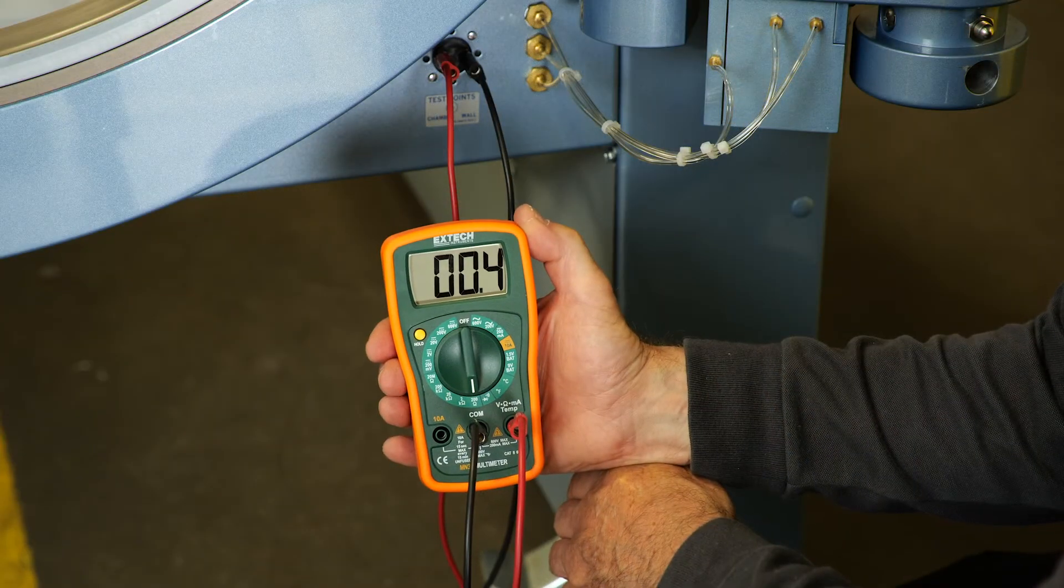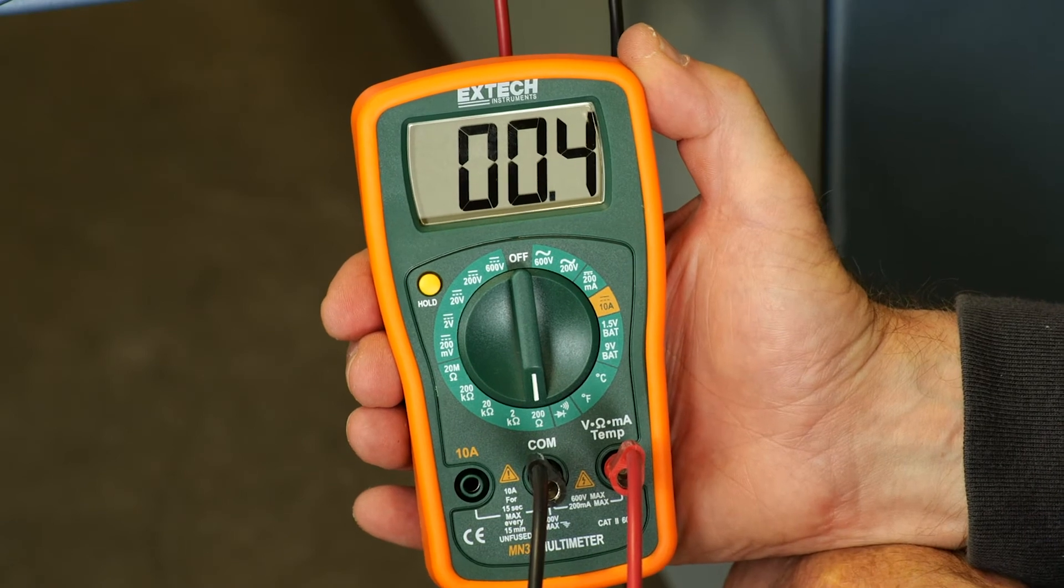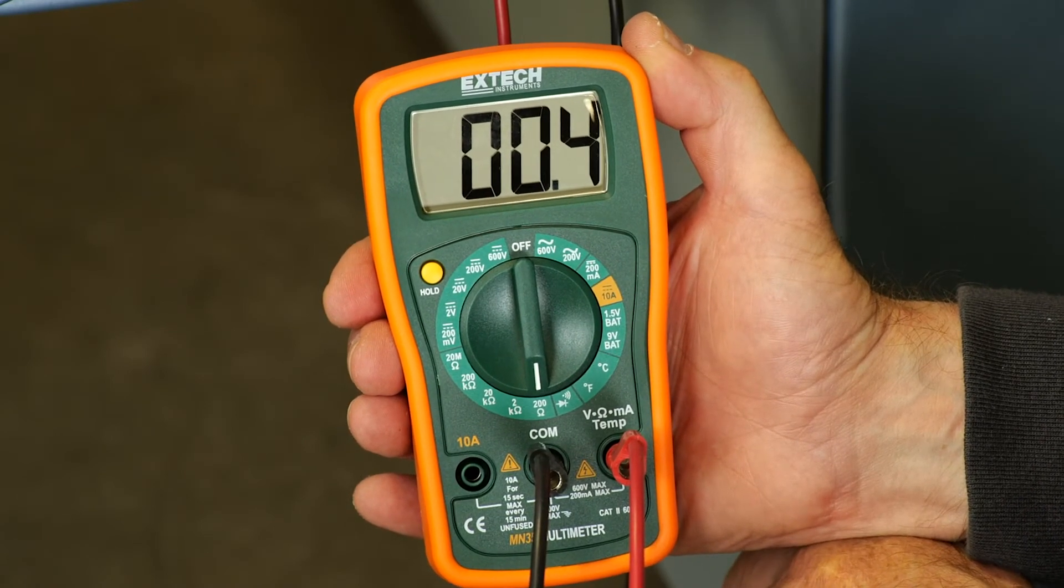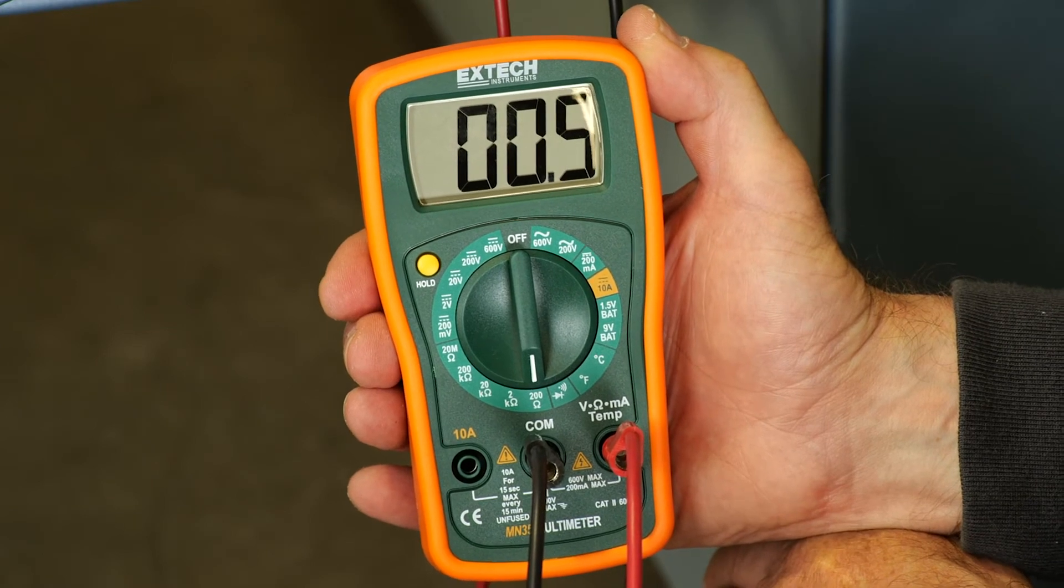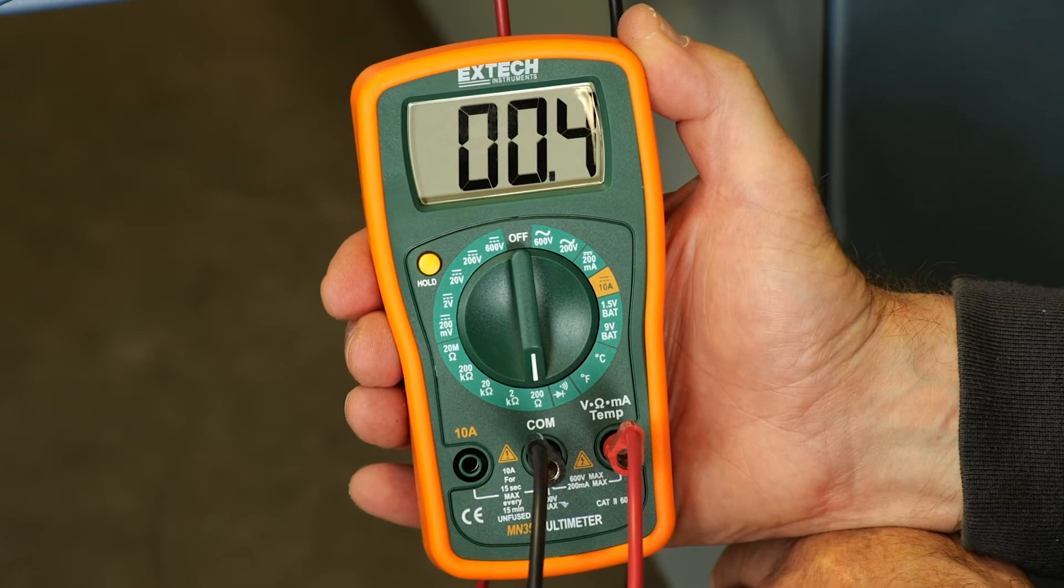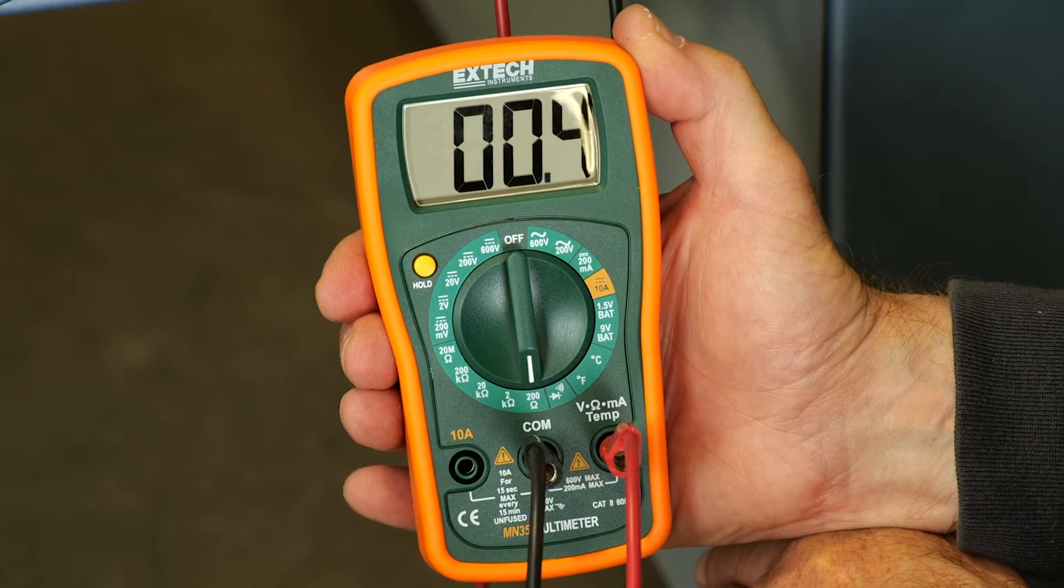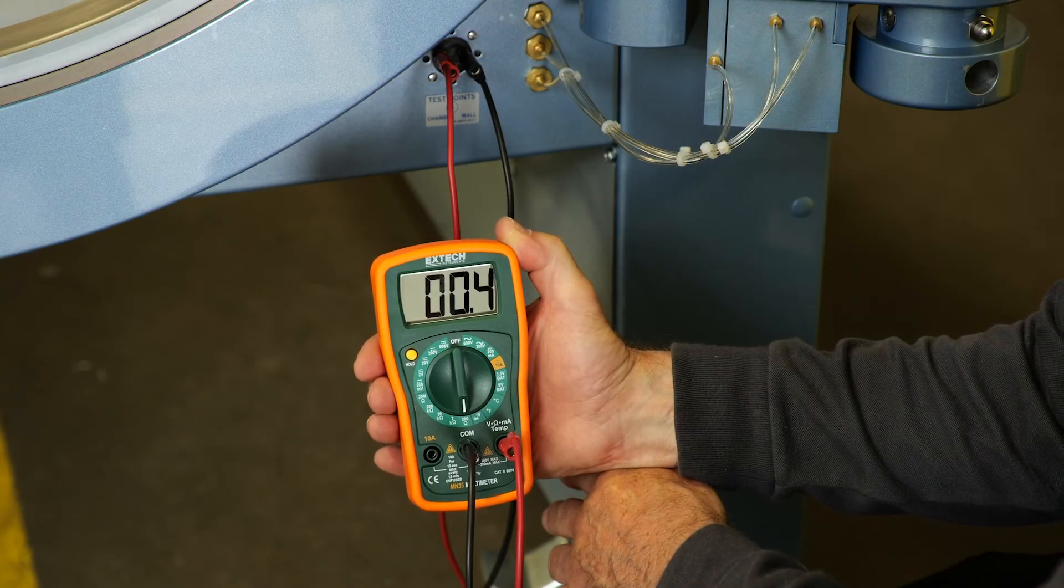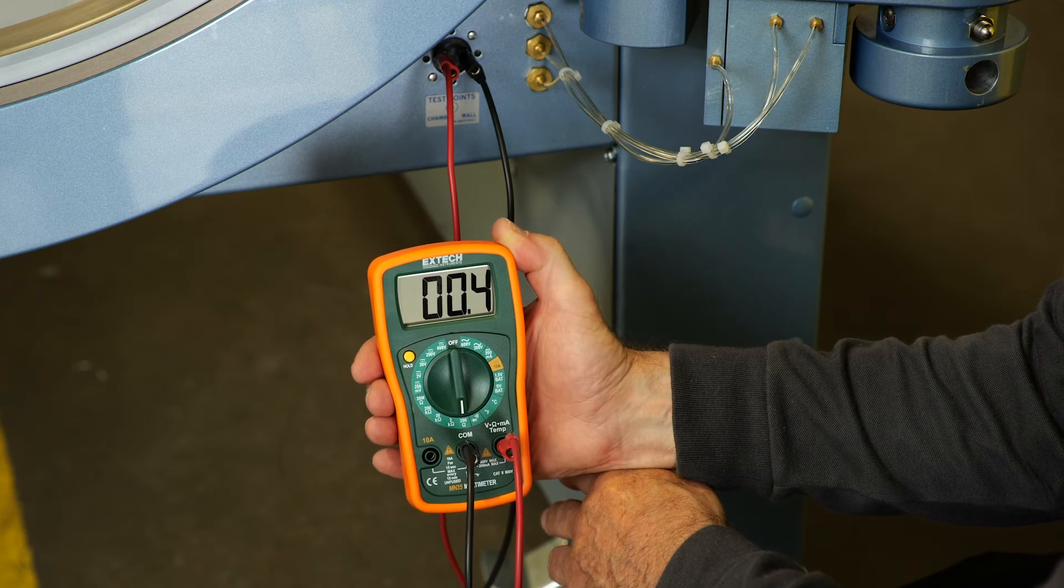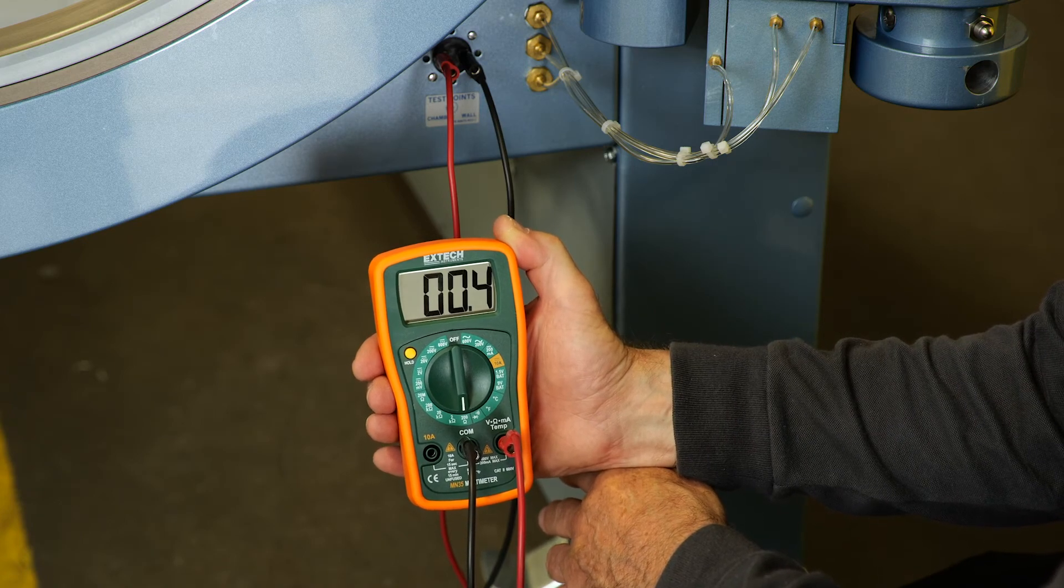You want to set the meter for the lowest ohm scale. I'm using the meter that comes with the Seacrest test kit, and that scale is 200 ohms. If you're using your ohm meter, it may be less or a little bit more, but you do want it on the lowest scale for ohms. The reading on the ohm meter should be less than one ohm. The reading we have here is 0.4. That is excellent.